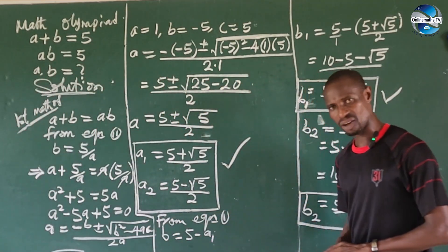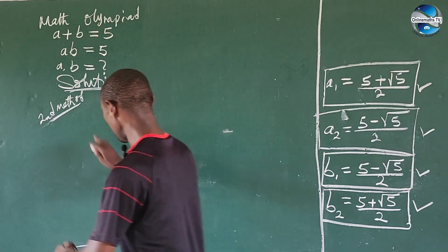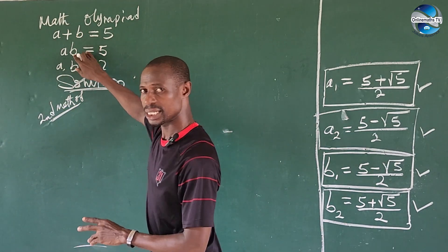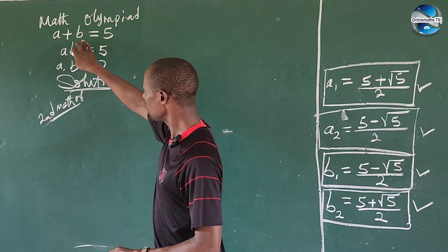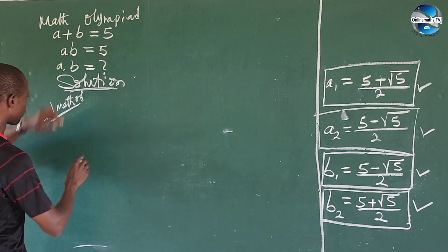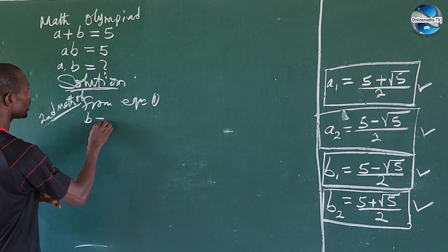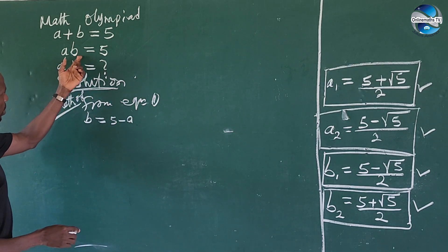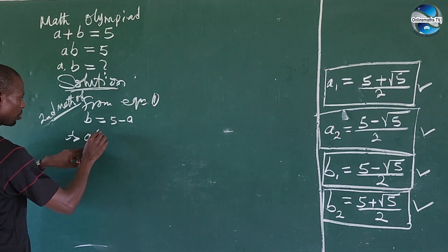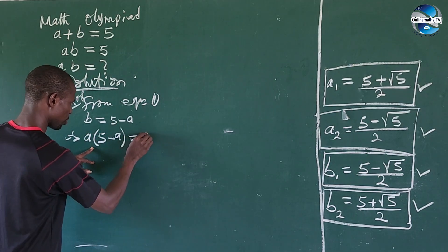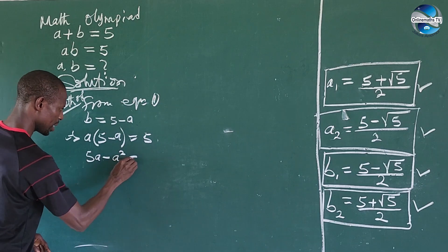Now let's check the second method. In the first method I equated the two equations, but in the second method we directly make b the subject of the formula in equation one. From equation one, b equals five minus a. We substitute this into equation two: a times (five minus a) equals five, which expands to five a minus a squared equals five.